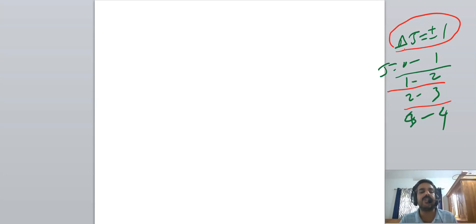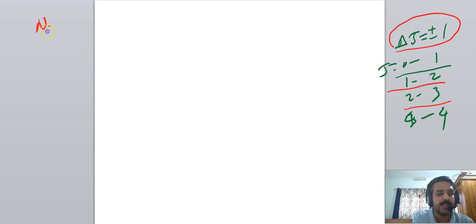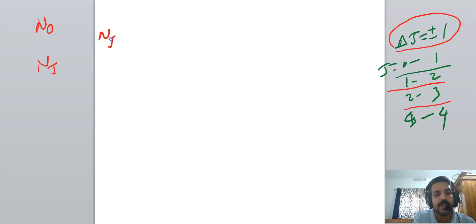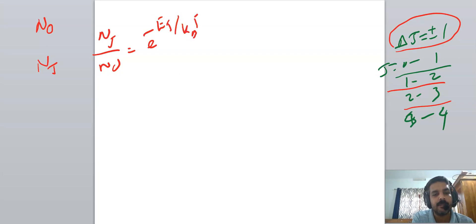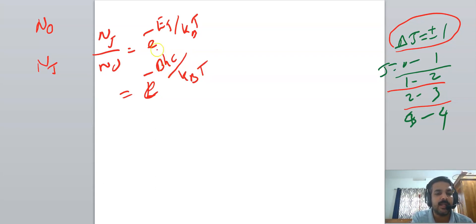So equal transition probability is ruled out as the cause of intensity variation. The second factor affecting intensity is the population of the level: the transition from a more populated level will be more intense. The population of a particular level is determined by the Maxwell-Boltzmann equation from statistical thermodynamics. The number of molecules in the Jth level, Nⱼ, divided by N₀ equals e^(−Eⱼ/kT), where Eⱼ = BhcJ(J+1).